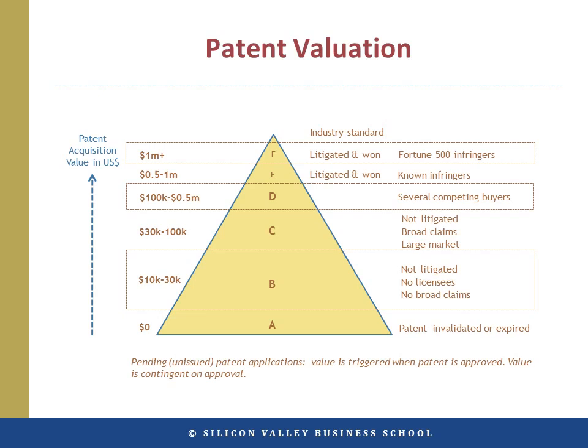In Group F, there are some patents valued at $1 million or more. These are patents that have been successfully litigated — battle-tested in the courts — with identified Fortune 500 infringers that can sometimes bring a price in excess of $1 million each.